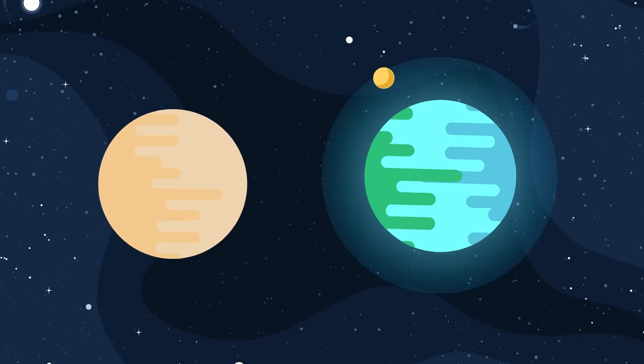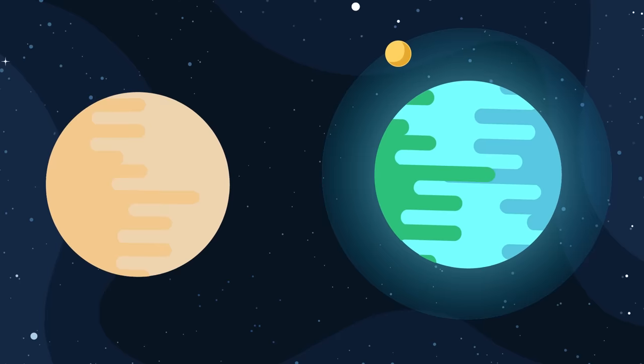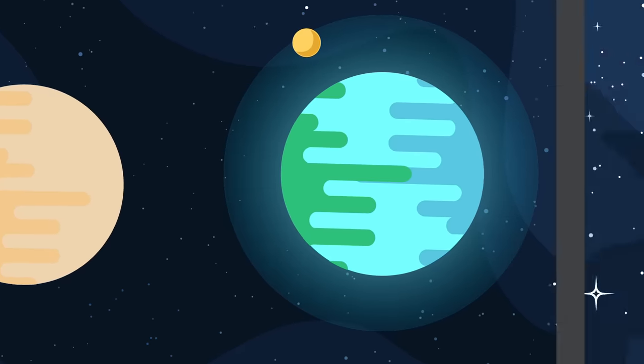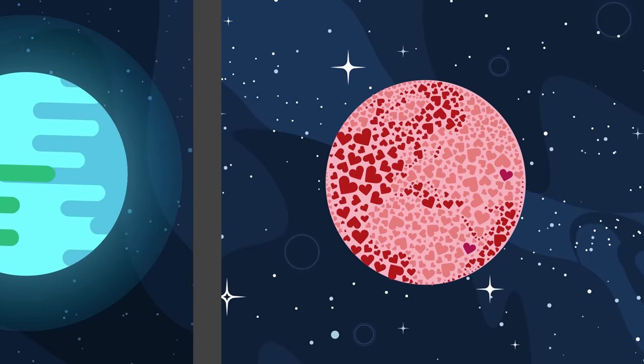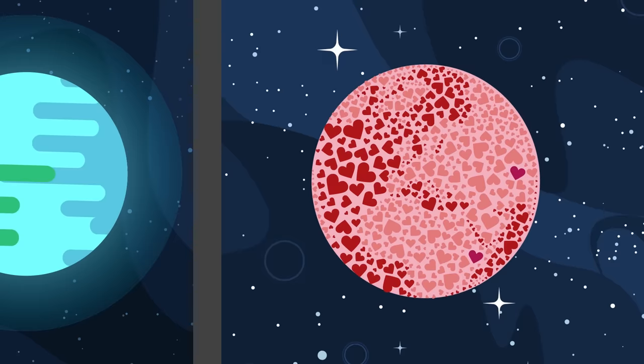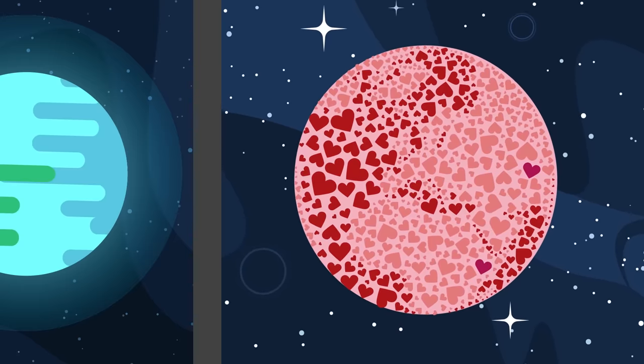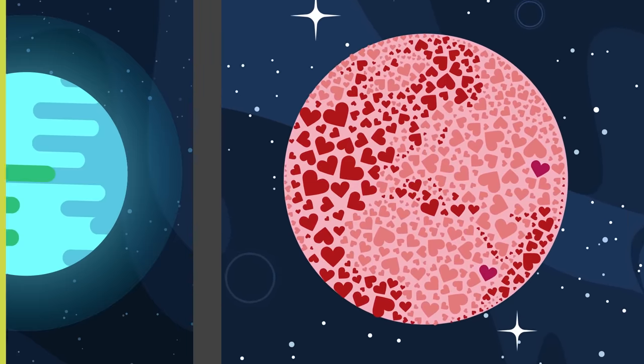Sometimes we call the planet Venus Earth's twin, but that's only because the two planets are roughly equal in size. After that, not much else is similar, and because of the extreme temperatures on the so-called planet of love, humans would not stand any chance of survival.